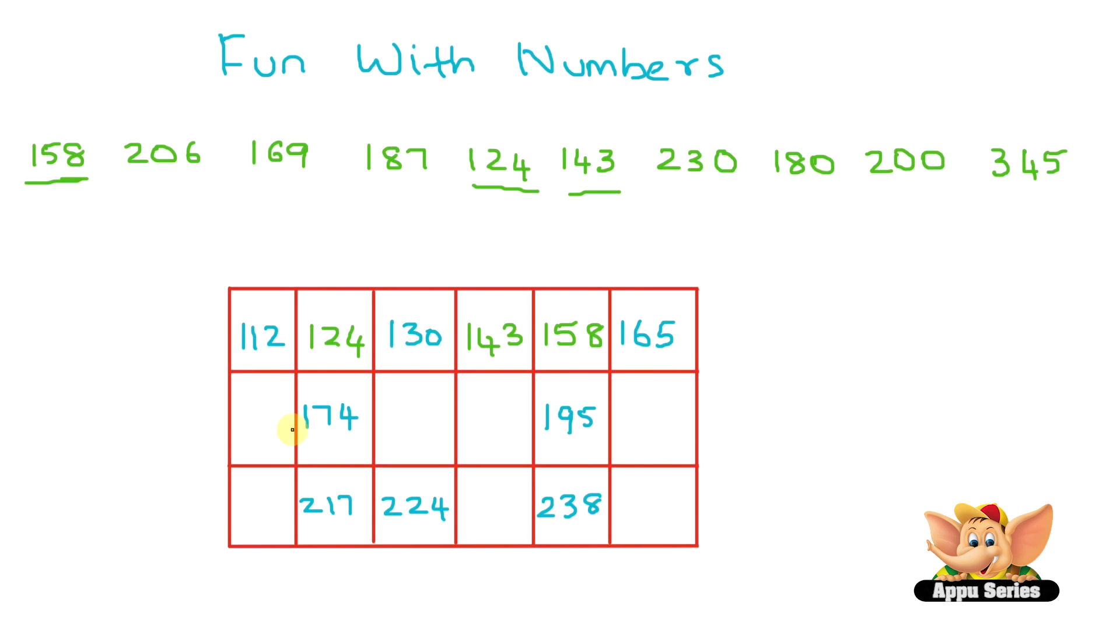Now, we need a number that comes between 165 and 174. Let's take a look at these numbers. We have 169. Yep, 169 comes before 174 and after 165. Great. Now, let's go on to the next one. We've got 174. What comes after 174? Let's look at these numbers again. We have 180. Let's put 180. We know that comes after 174.